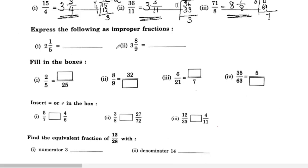Express the following as an improper fraction. The method is: multiply the denominator by the whole number, then add the numerator, keeping the denominator the same. For 2 and 1 by 5: 5 into 2 is 10, 10 plus 1 is 11 — so the improper fraction is 11 by 5.